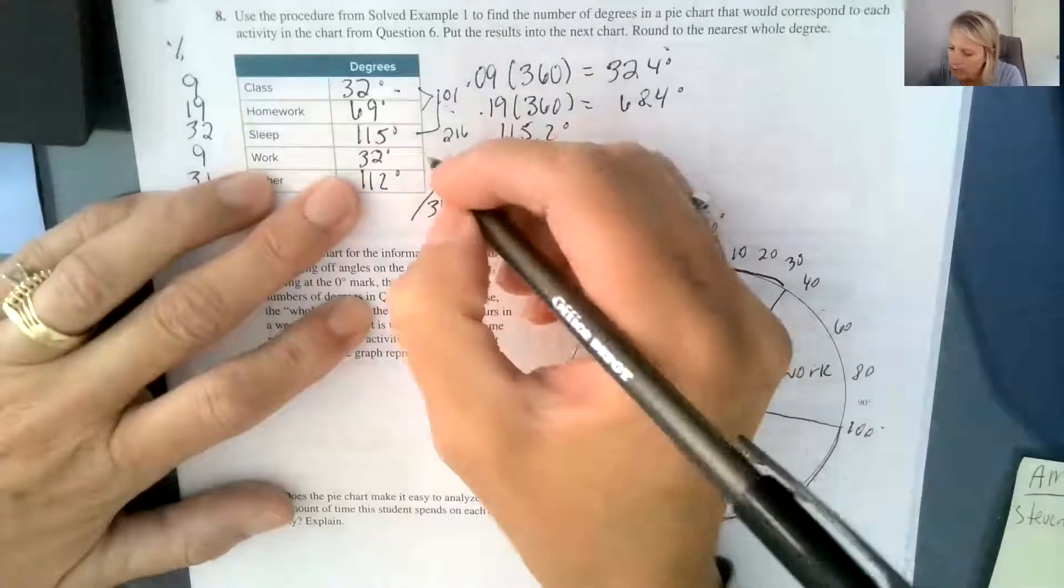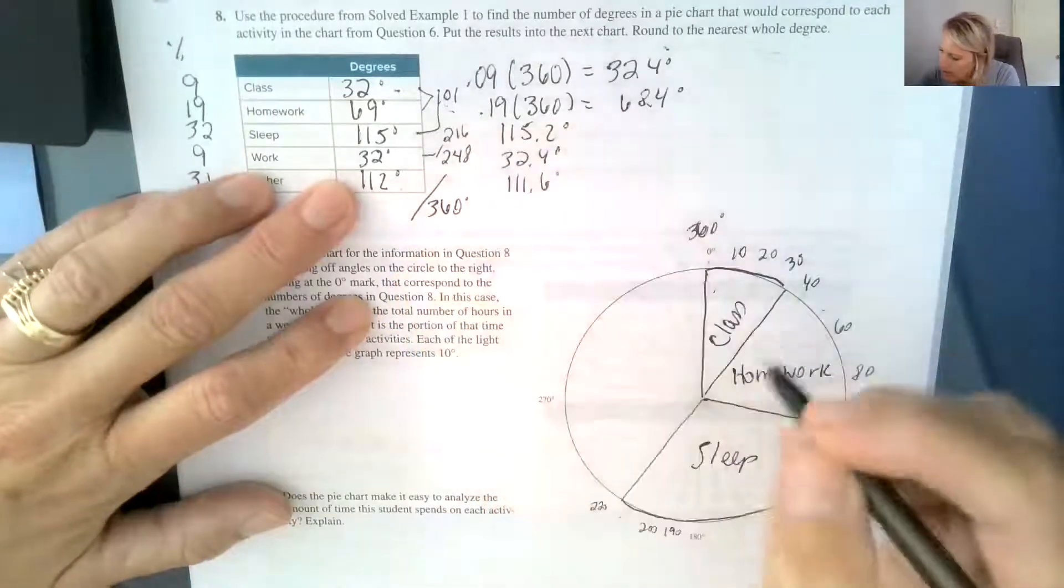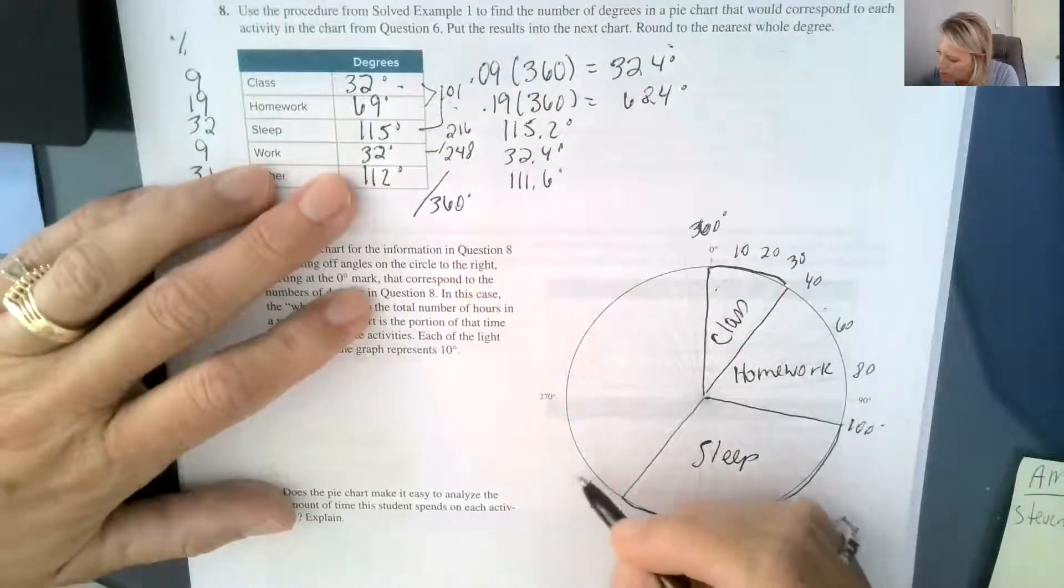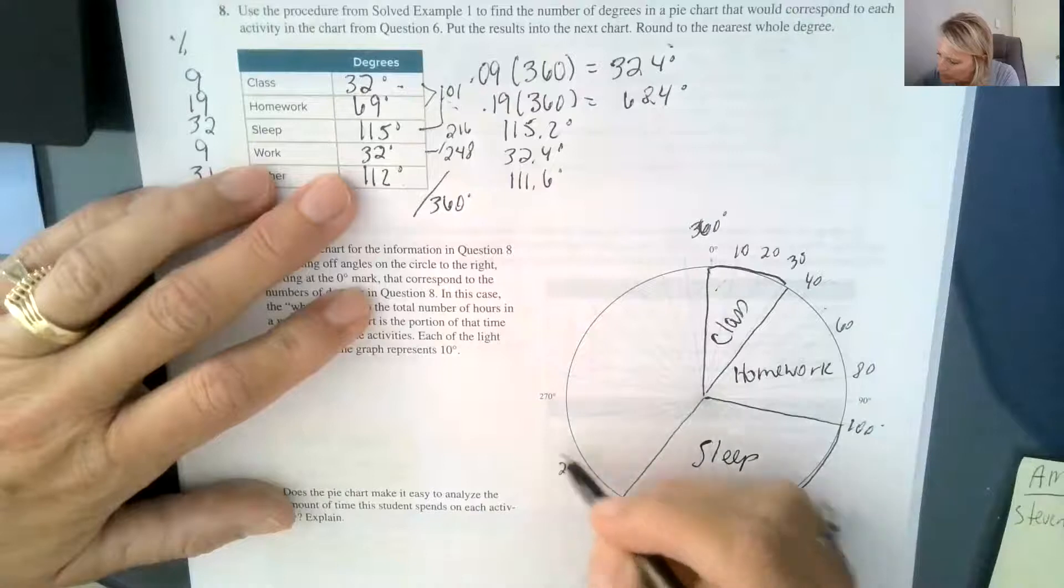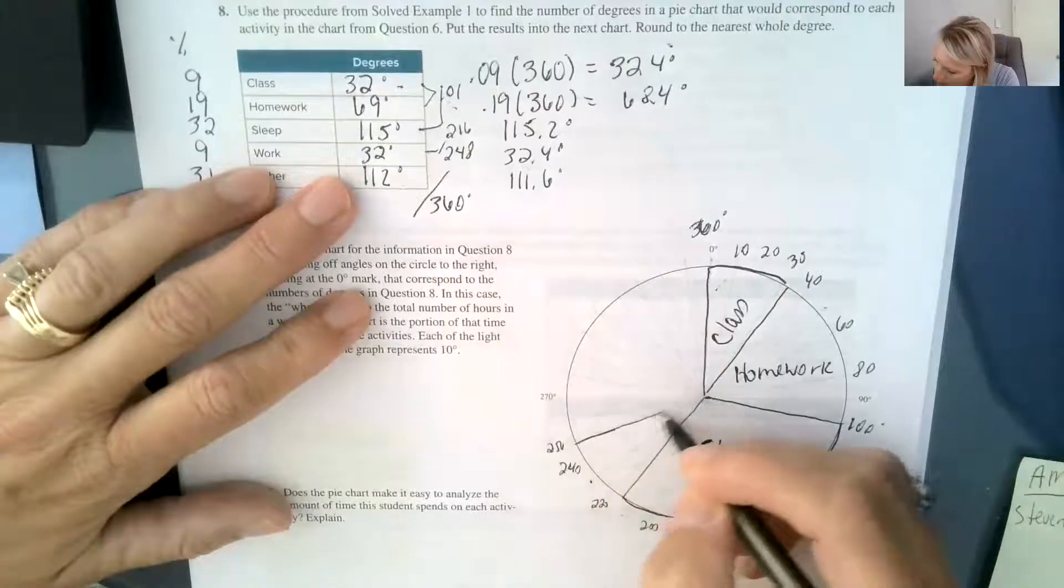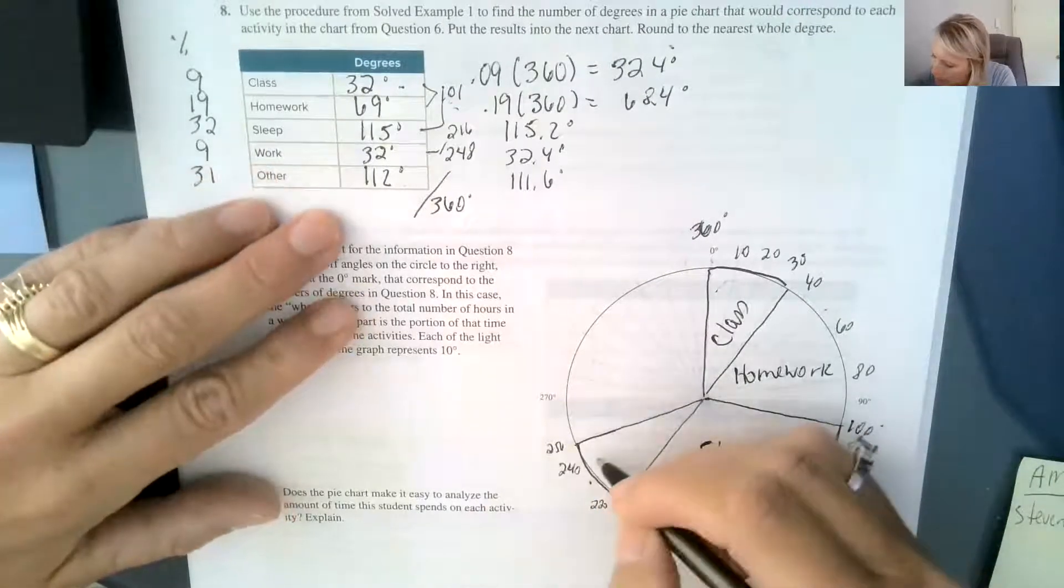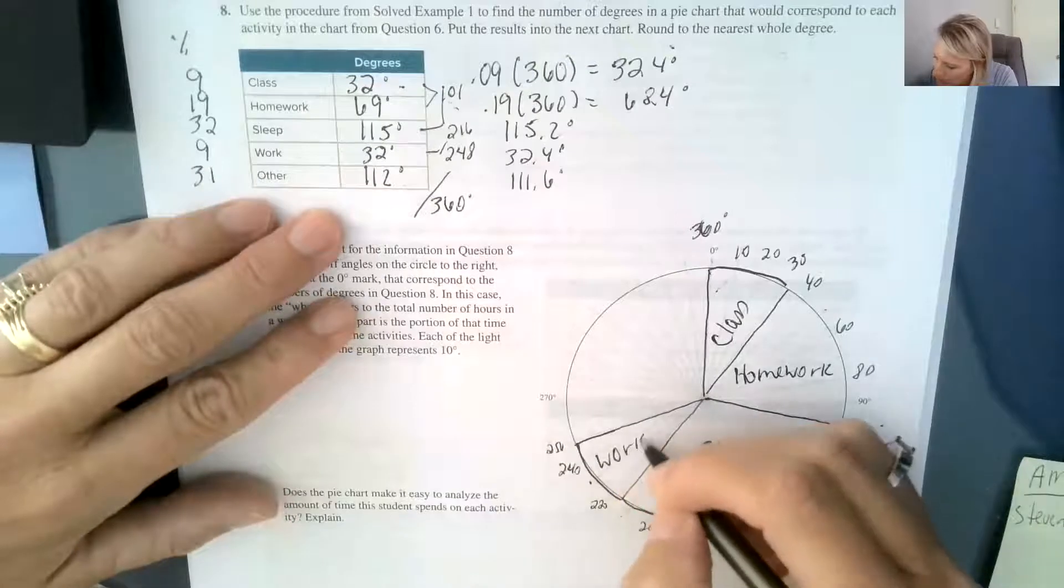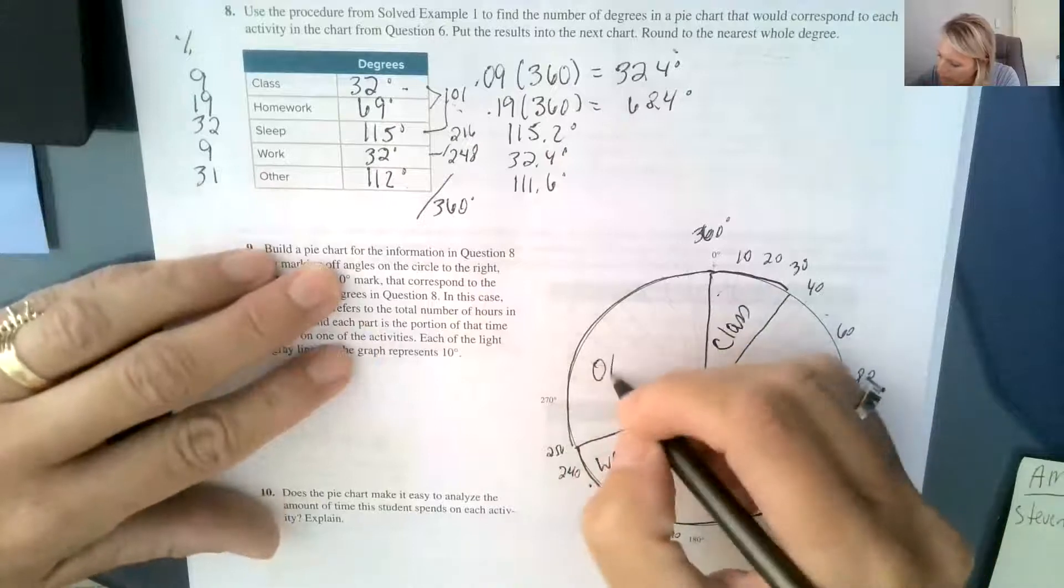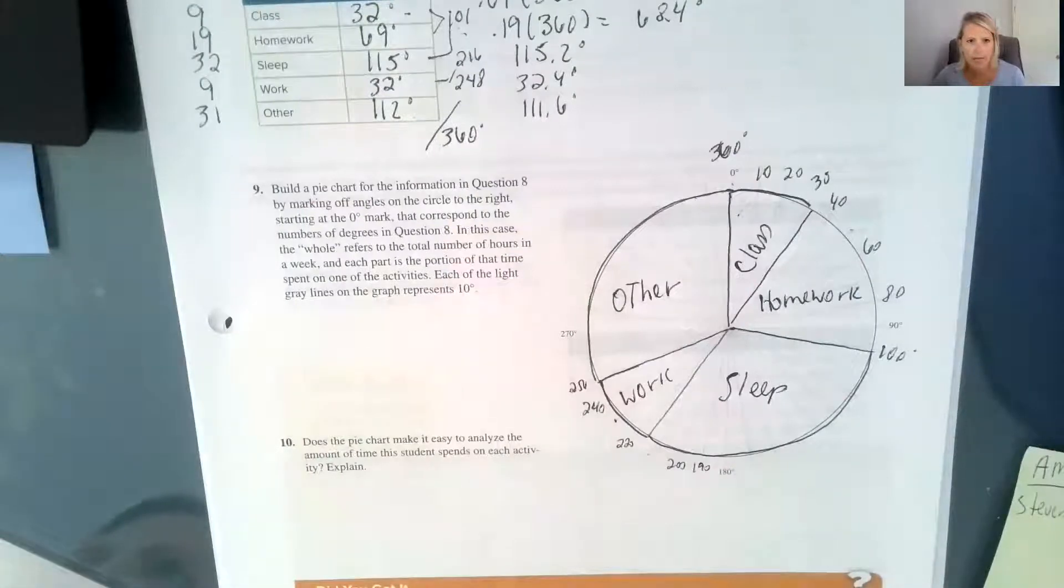And then I'm going to add in another 32, and that's going to get me to 248. And this is 270, this is 220, so we have 230, 240, 250. So this one should be right before 250, so 248. So this part of my pie is going to be for work. And then that leaves the rest of my circle for other fun activities. And there we have it.